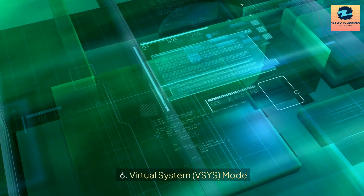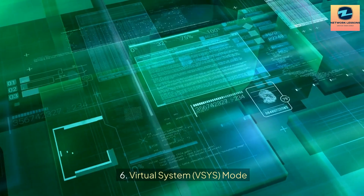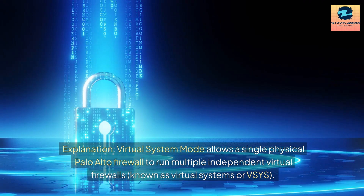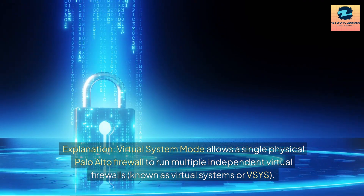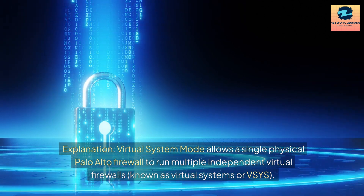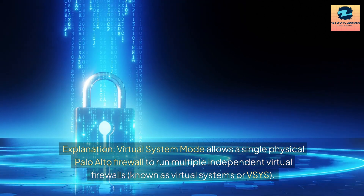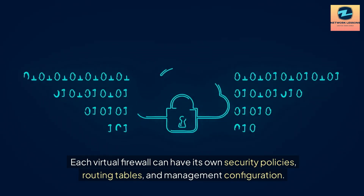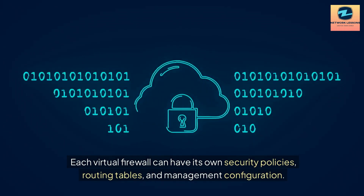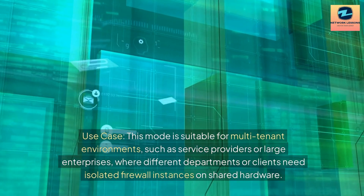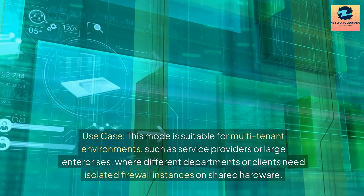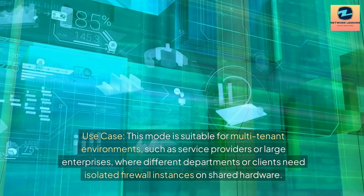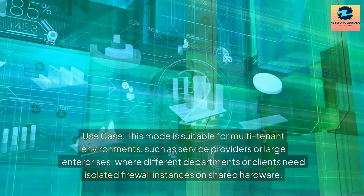6. Virtual System Mode: Virtual System mode allows a single physical Palo Alto firewall to run multiple independent virtual firewalls, known as Virtual Systems or VSS. Each virtual firewall can have its own security policies, routing tables, and management configuration. Use Case: This mode is suitable for multi-tenant environments, such as service providers or large enterprises, where different departments or clients need isolated firewall instances on shared hardware.